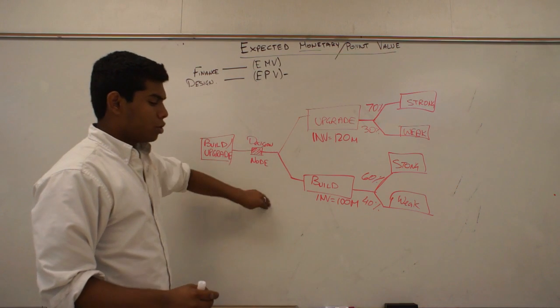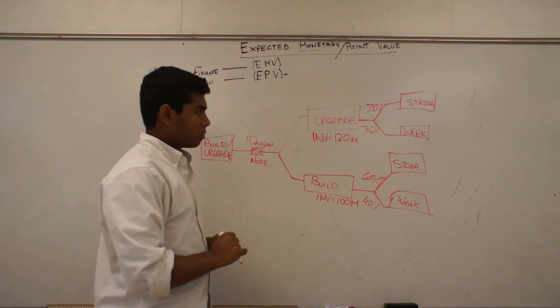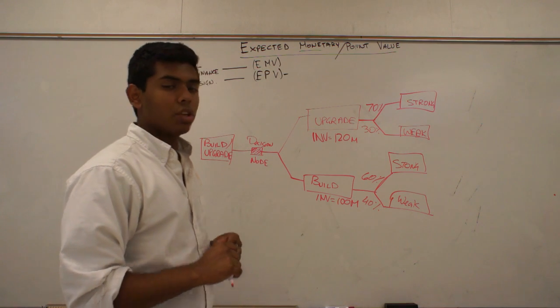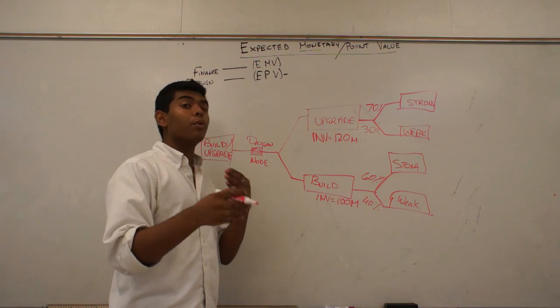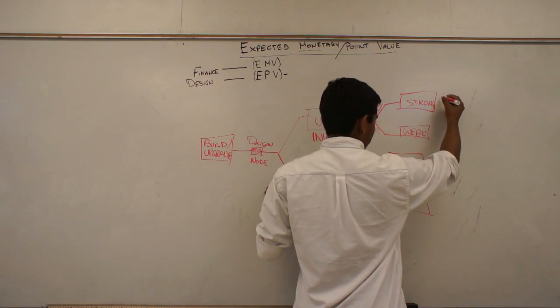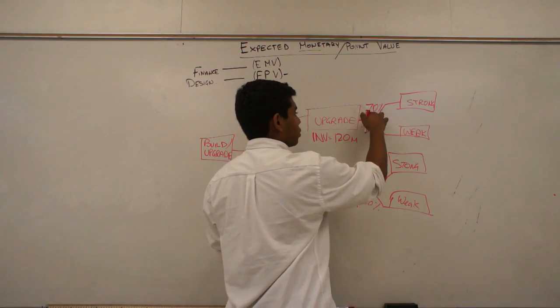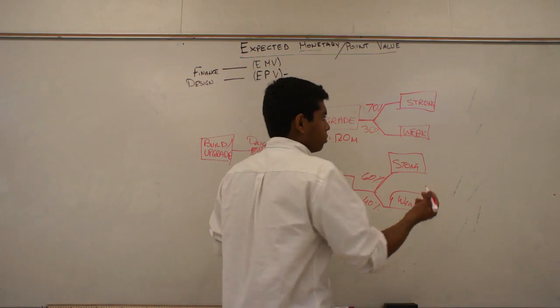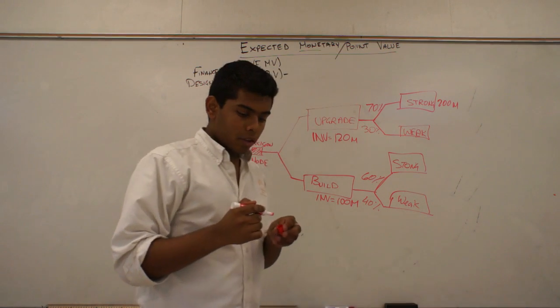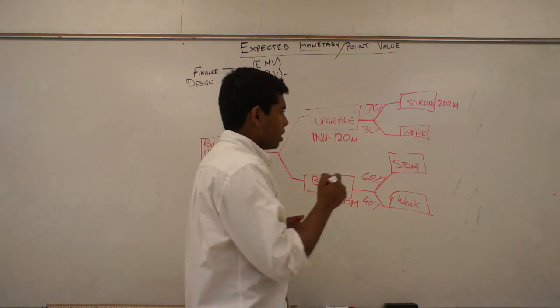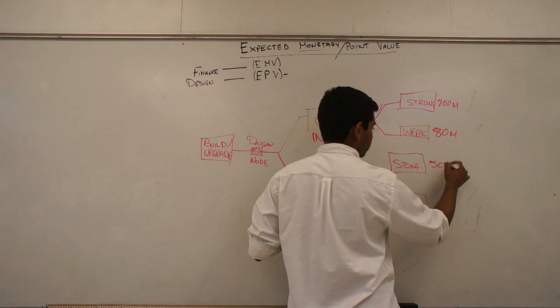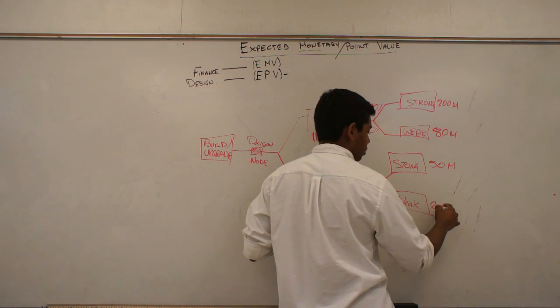So which one should we choose? Well, we should look at how much each scenario will give us back. What is our return on investment? So let's say the return on investment if the market is strong is around $200 million. And the return on investment when the market is weak is $80 million. This is, let's say, $50 million, and we can say this is $20 million.